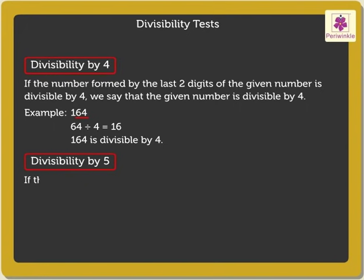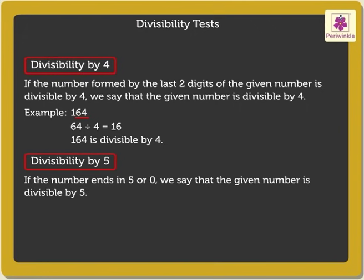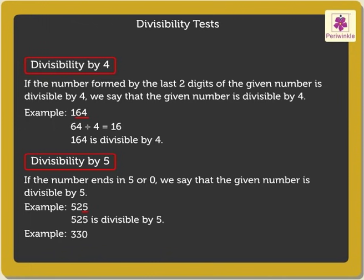Divisibility by 5. If the number ends in 5 or 0, we say that the given number is divisible by 5. For example, 525 ends in 5. Thus, it is divisible by 5. Look at another example: 330 ends in 0. Hence, it is divisible by 5.